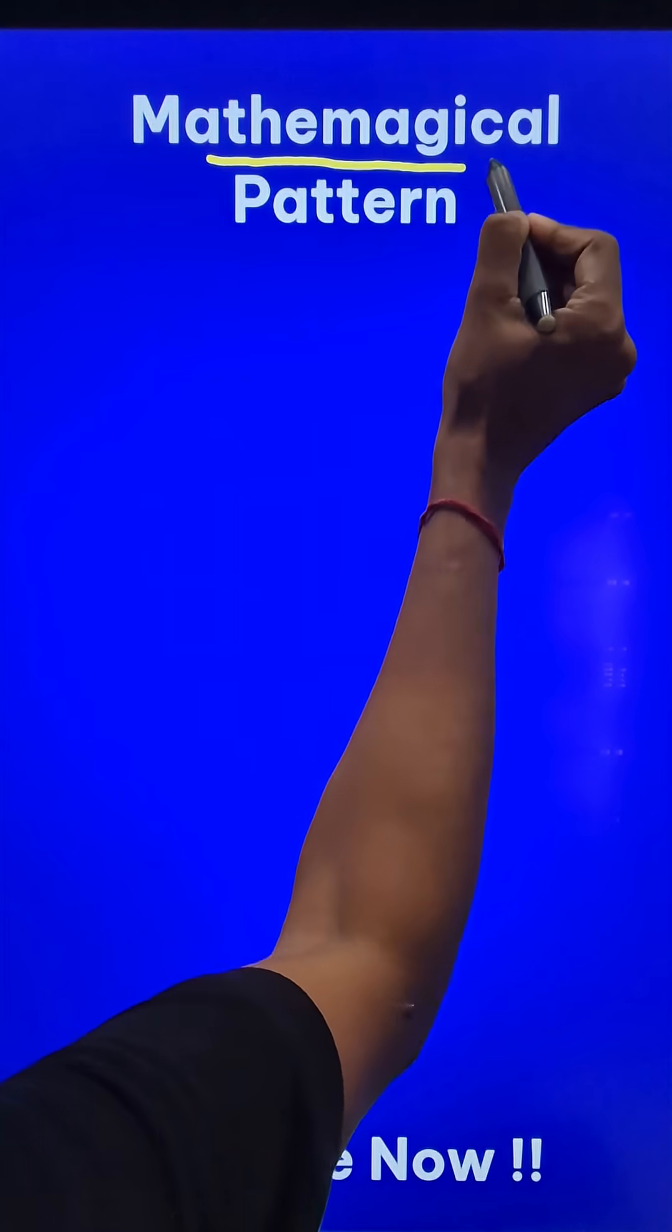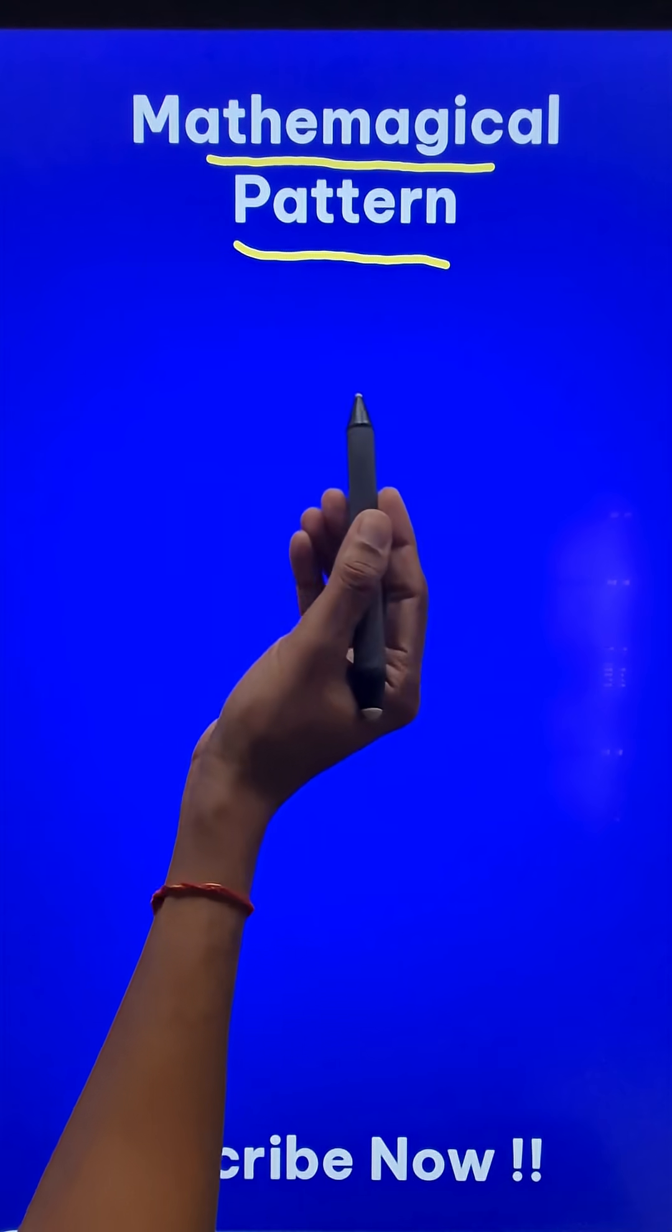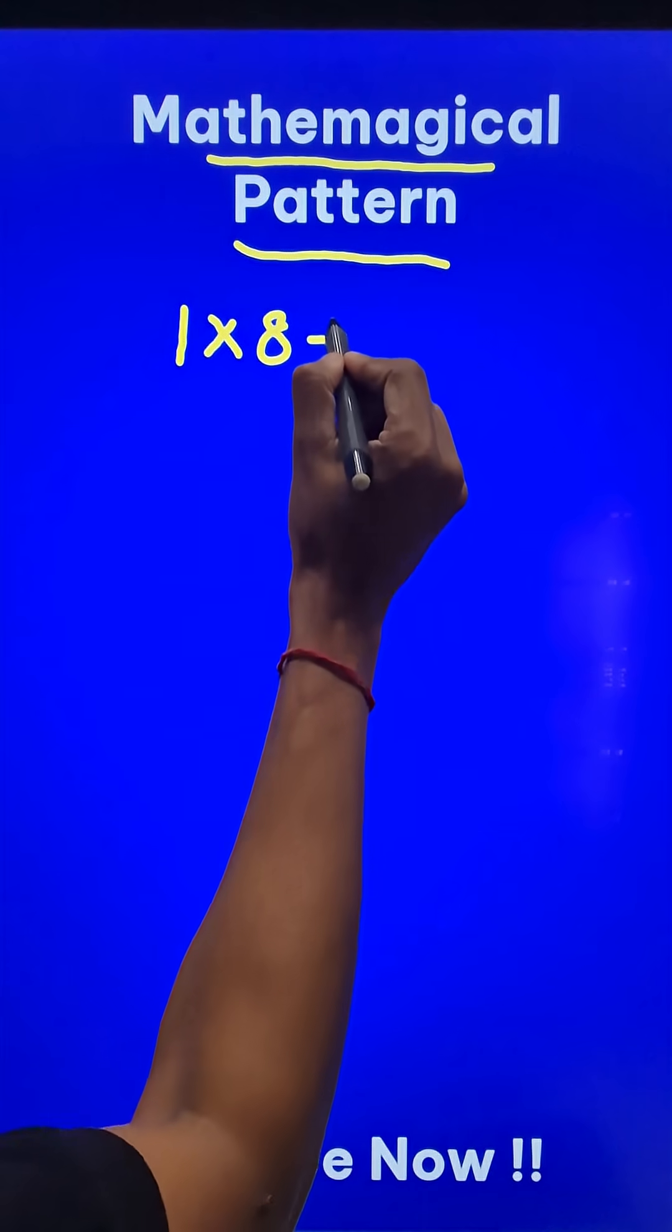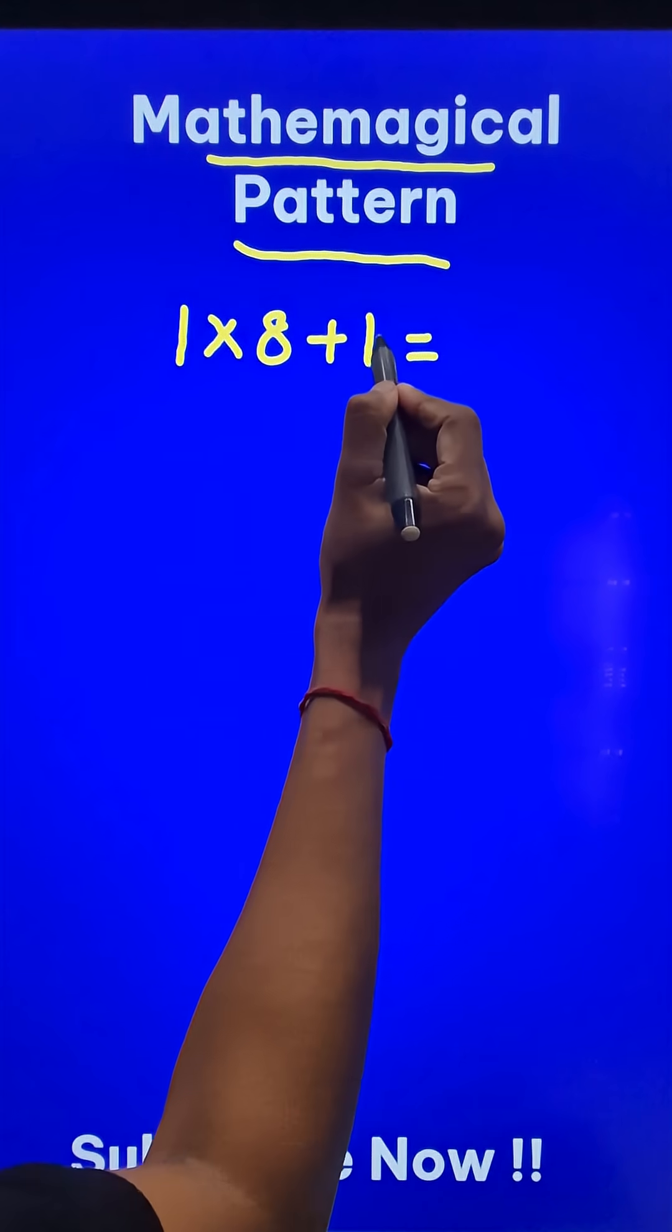Here is a mathematical pattern of numbers. When you do 1 times 8 and add 1 to the result, you get 8 plus 1, which equals 9.